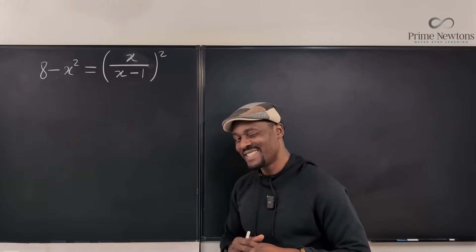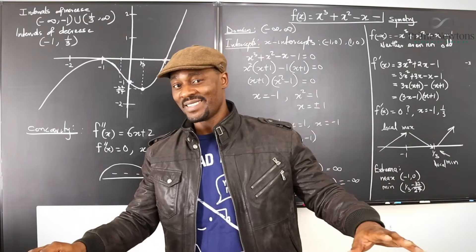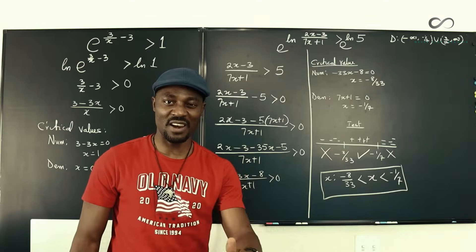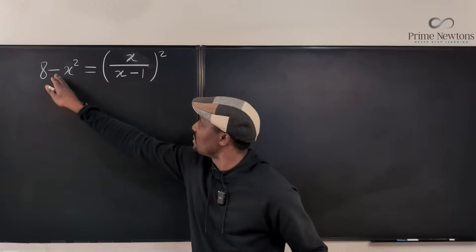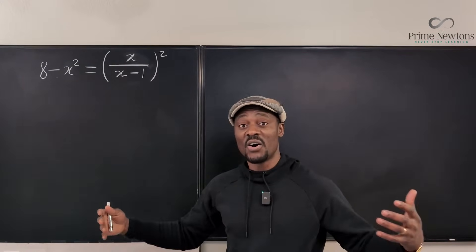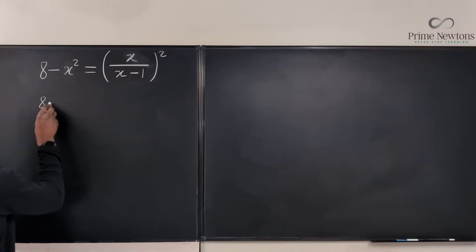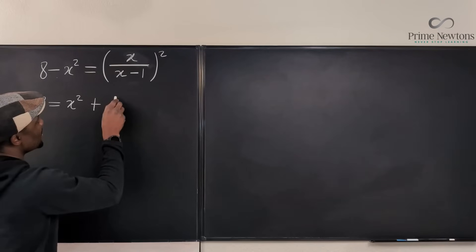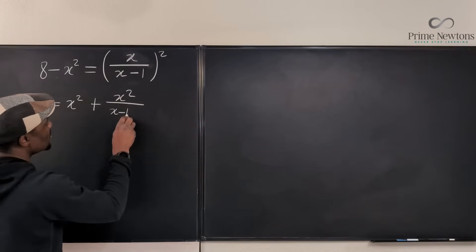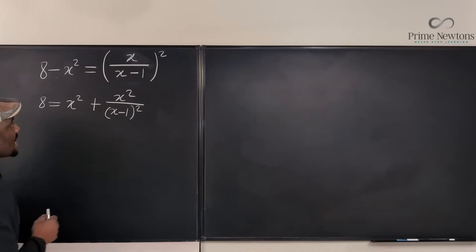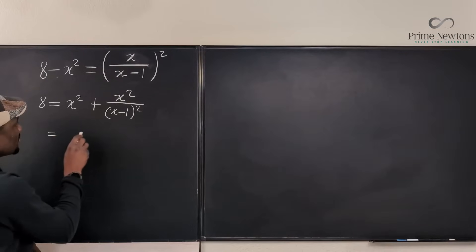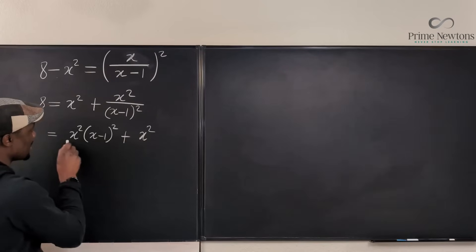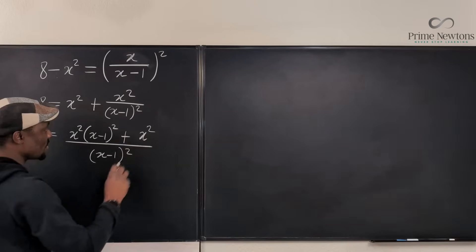The first thing I'm going to do is move this term so that the x family are on the same side. So I have 8 minus x squared equals — and if I distribute, it's going to be x squared over x minus 1, squared. If I give these two a common denominator, I end up with x squared times (x minus 1) squared plus x squared, divided by (x minus 1) squared.